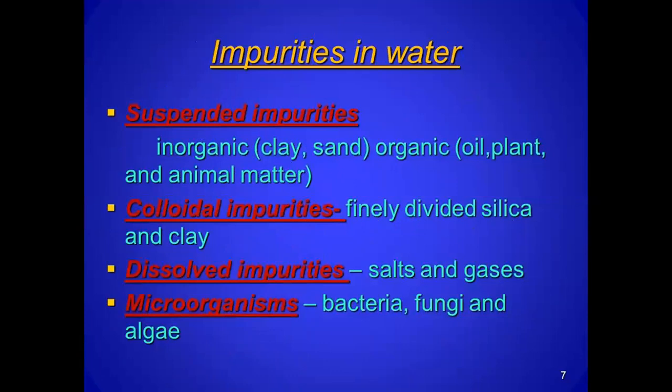Impurities in water — kya kya hai? Suspended impurities: inorganic — clay, sand; organic — oil, plant and animal matter. Colloidal impurities: finely divided silica and clay. Dissolved impurities: salts and gases dissolved in water. Microorganisms: bacteria, fungi and algae.